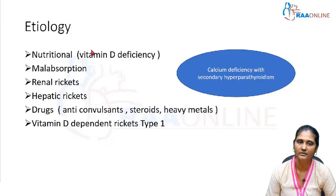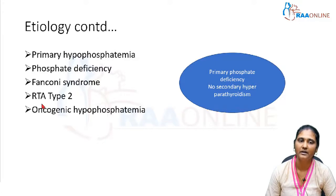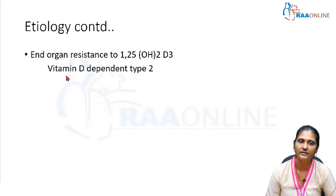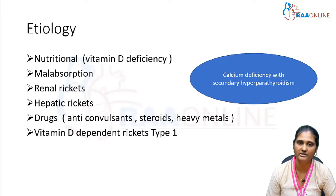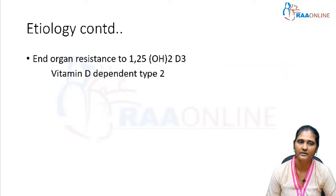The second classification is primary phosphate deficiency, where there is no secondary hyperparathyroidism. Causes include primary hypophosphatemia, phosphate deficiency, Fanconi syndrome, renal tubular acidosis type 2 (RTA type 2), and oncogenic hypophosphatemia. The third category is end-organ resistance to the active form of vitamin D, 1,25-dihydroxycholecalciferol — that is vitamin D dependent type 2. So etiology is classified into: calcium deficiency with secondary hyperparathyroidism, phosphate deficiency without secondary hyperparathyroidism, and end-organ resistance to vitamin D.